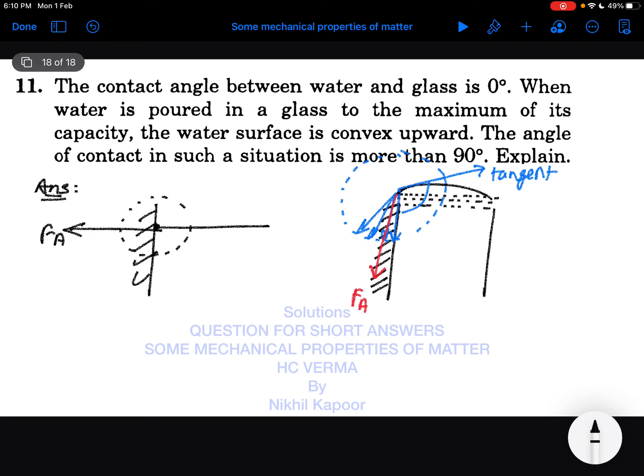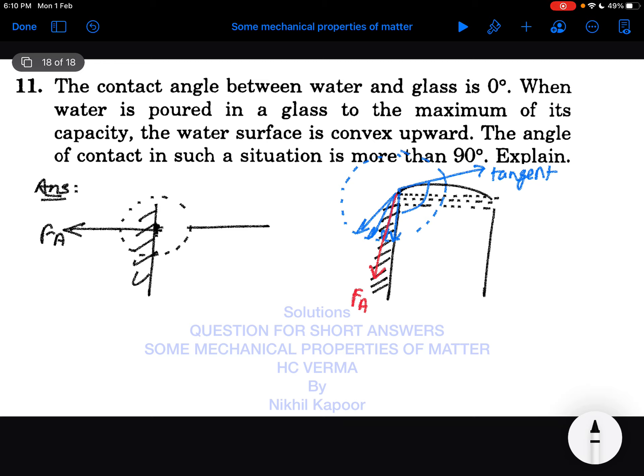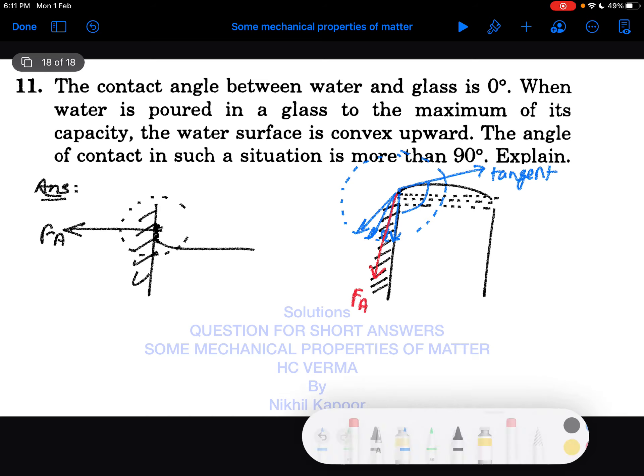Due to this attraction, the liquid molecules get attracted toward the surface of glass like this and their shape would be like this, which is 0 degrees.